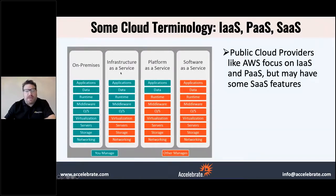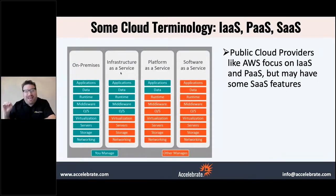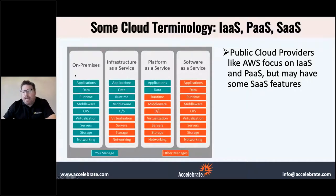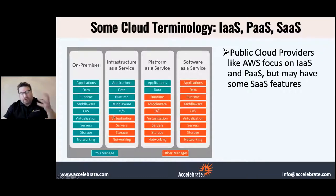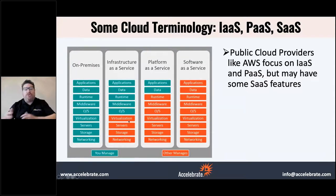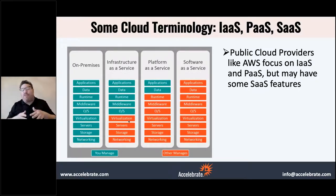When you go to infrastructure as a service, basically you're getting a virtual machine from your cloud vendor. In AWS we call it EC2 — in Azure they call them VMs, and in Google Cloud they call them VM instances. Amazon takes care of everything up to and including installation of the OS, then you manage the OS and install whatever on top. You get a virtual machine and don't think about the physical machine underneath. It's a double-edged sword — you get to do whatever you want on it, but you also have to maintain whatever you put on there.